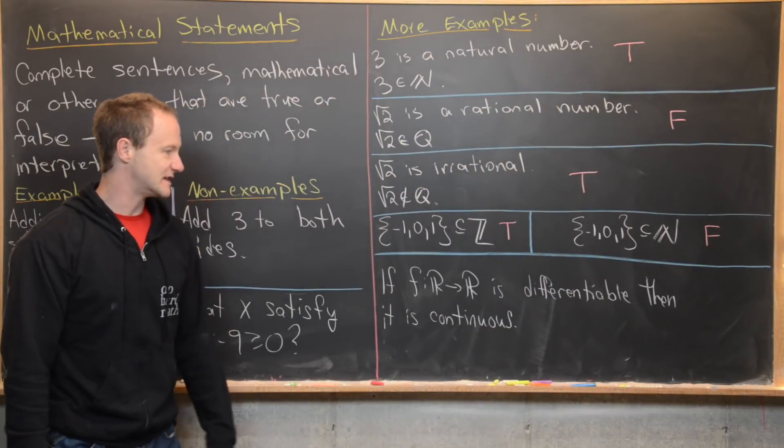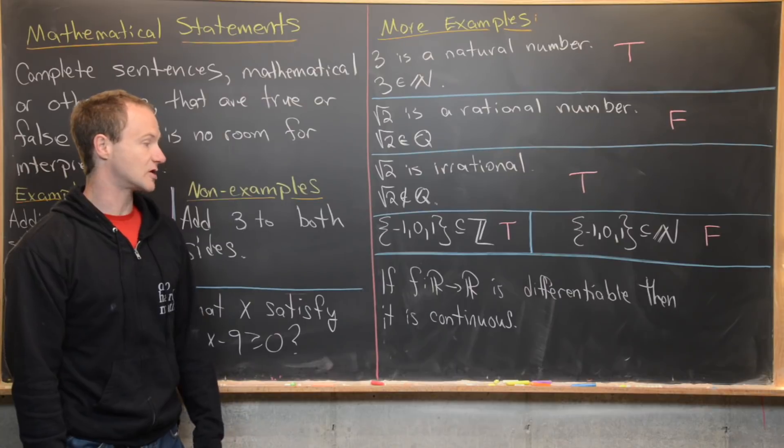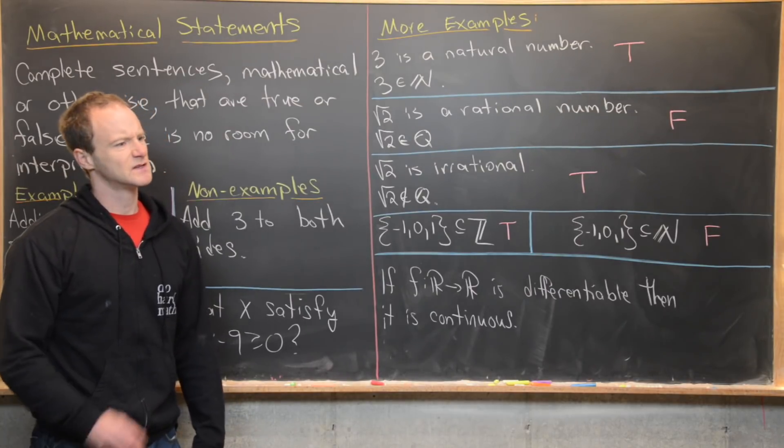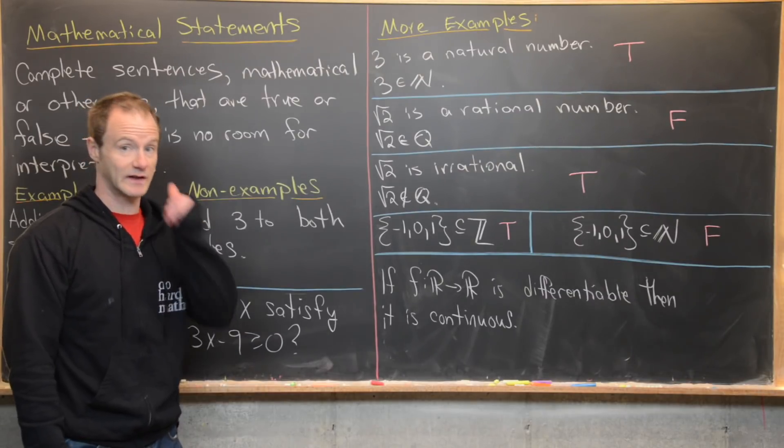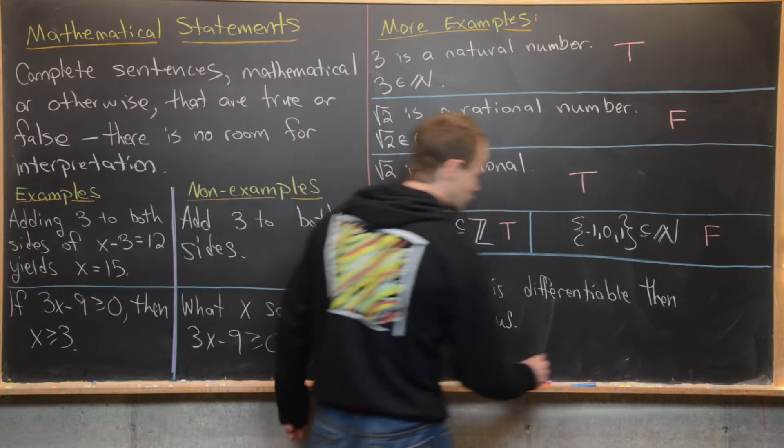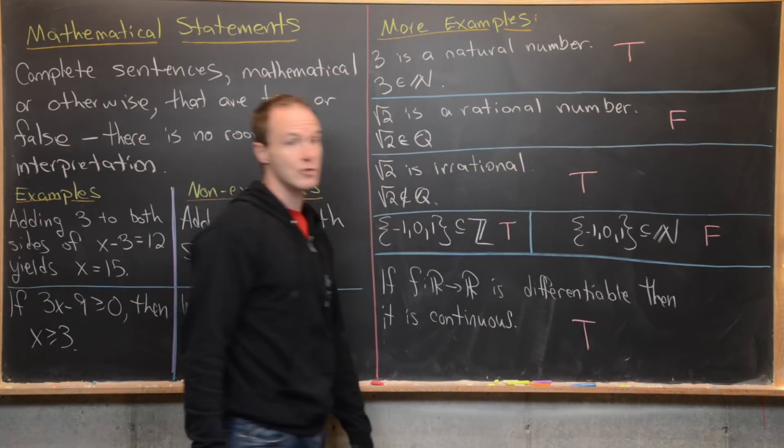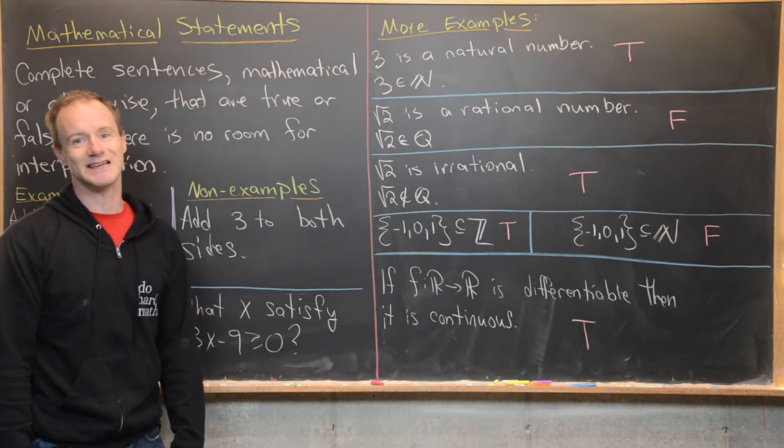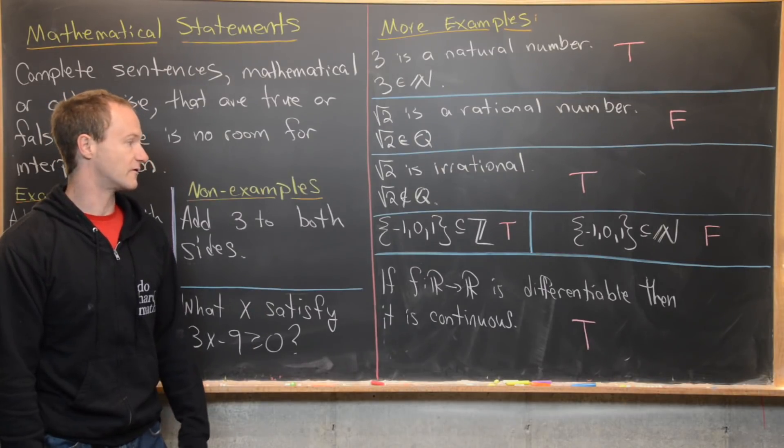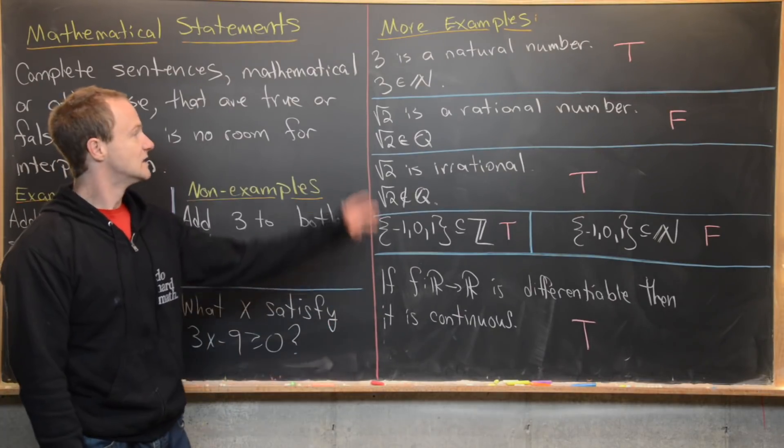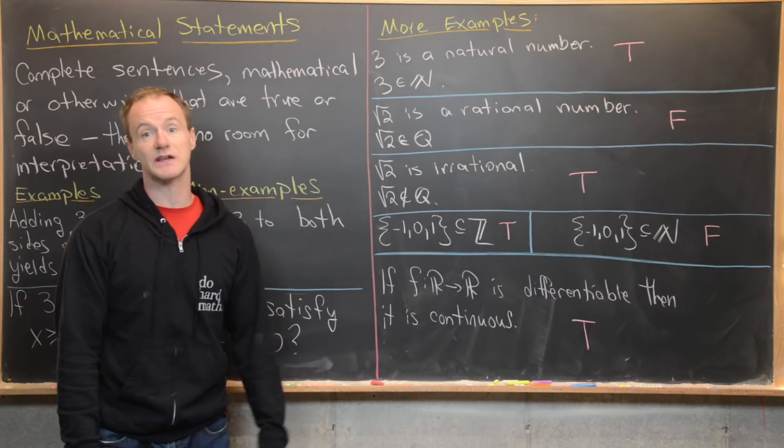Finally, we have this example at the bottom which says if F from R to R is differentiable, then it is continuous. Usually in an advanced calculus or beginning real analysis class, you would prove something like this. This is most definitely true. But even if you don't know whether or not it's true or false, you can probably guess that this is a mathematical statement. You just don't know whether it's true or false. But you can see that it's a mathematical statement by the construction of the sentence.